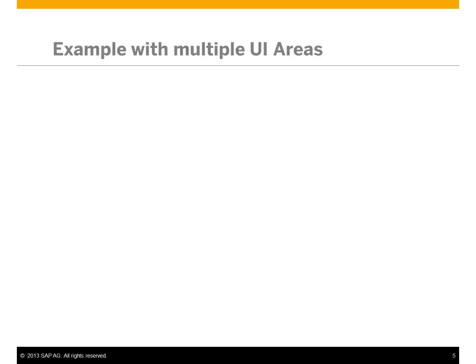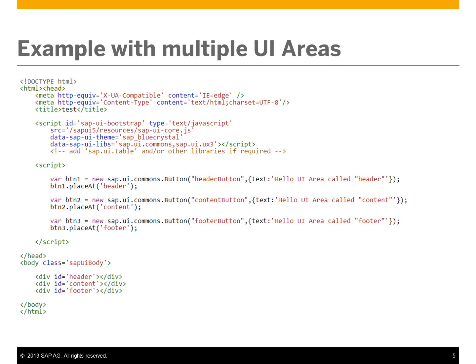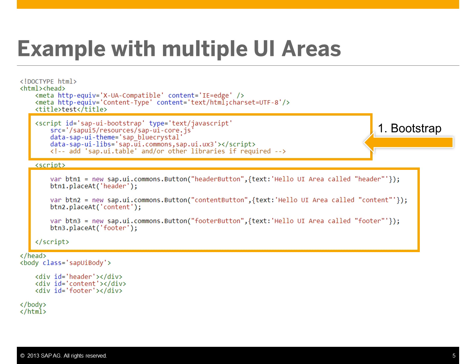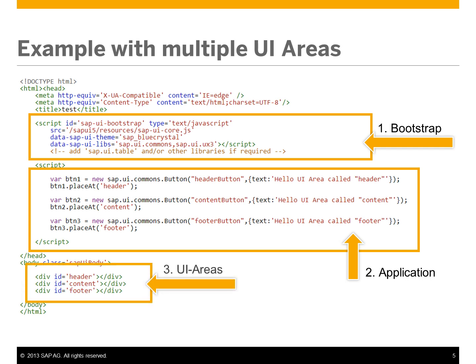A web application with one control won't be of much use, so let's look at an example that uses multiple UI areas. Again we have our Bootstrap code, then a section containing three buttons, with calls to the placeAt method to assign those buttons to the header, the menu, and the content div tags in our UI areas.